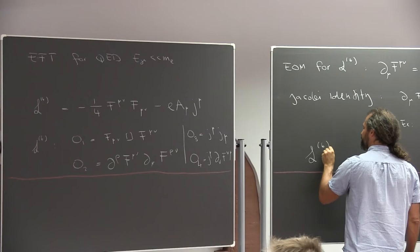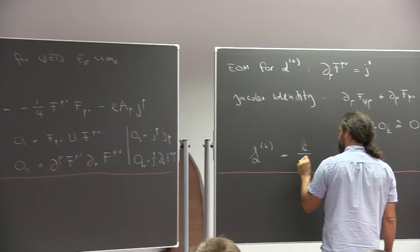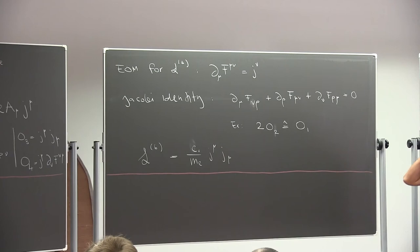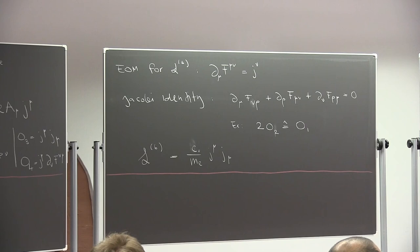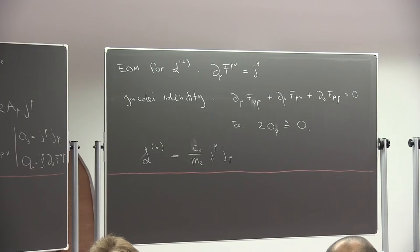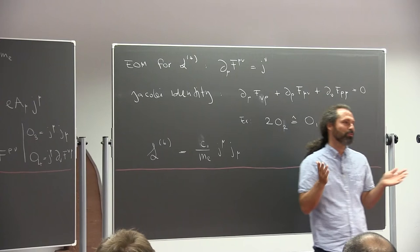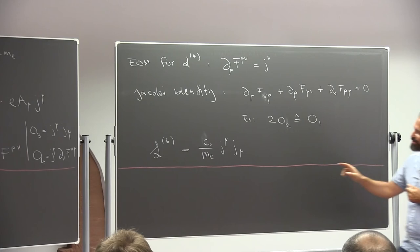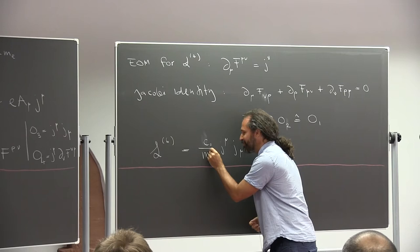Using the equation of motion and this Jacobi/Bianchi identity to eliminate operators, the end result is that L6 has one Wilson coefficient times an operator J^mu J^mu — a contact interaction between two currents. That's the only term remaining. Also, there is a correction: it should be 1/M_e^2 because it's dimension 6, two dimensions higher than L4.